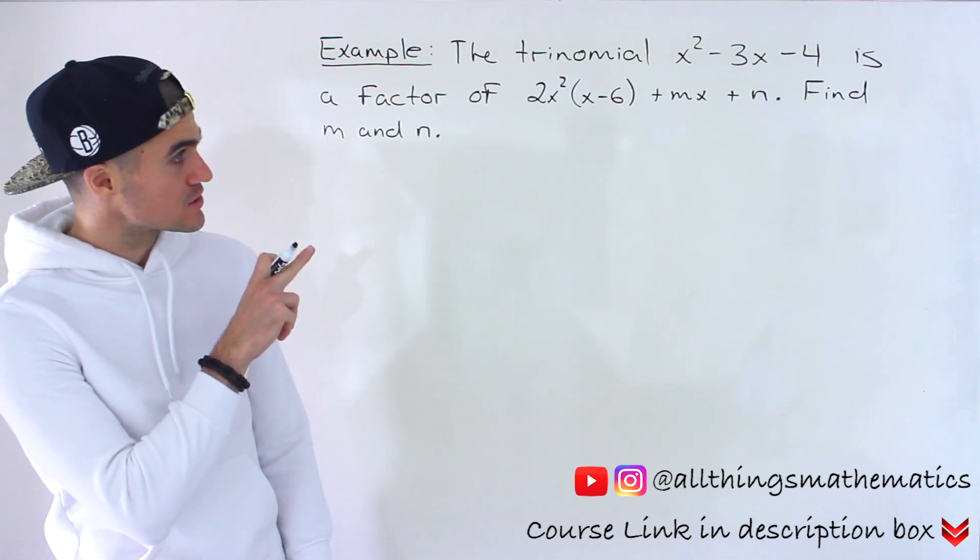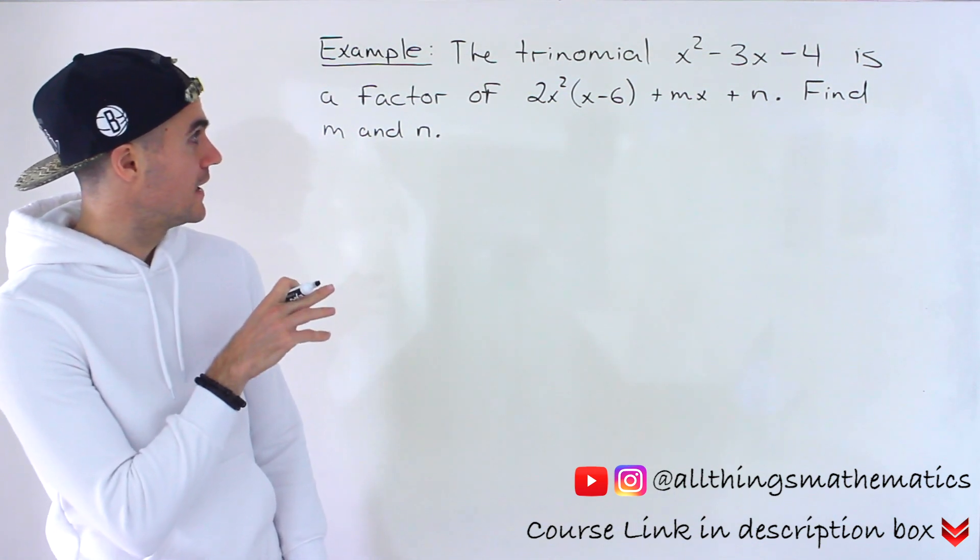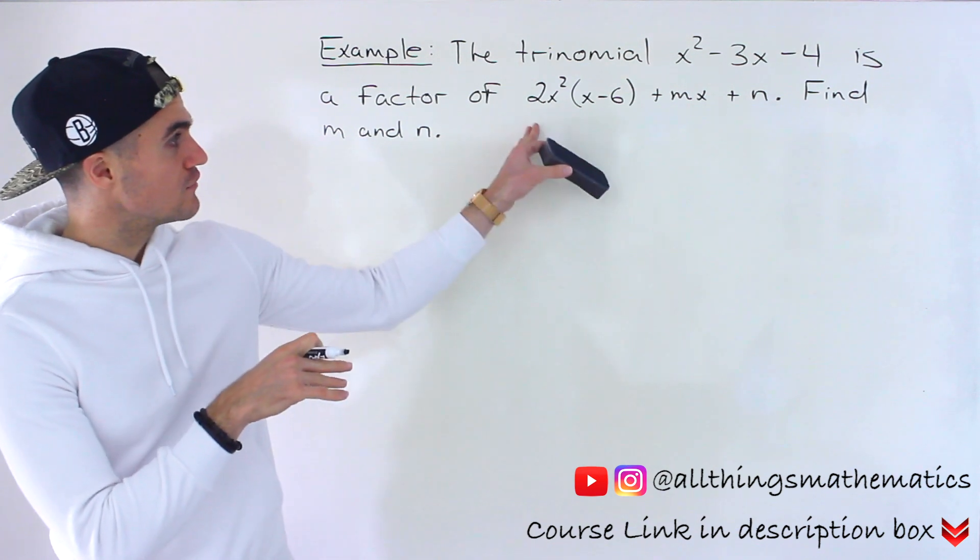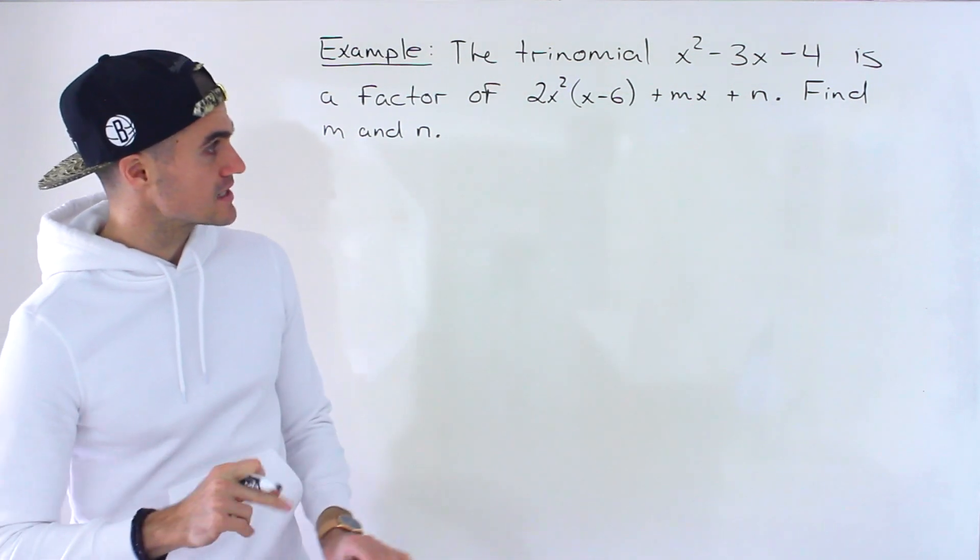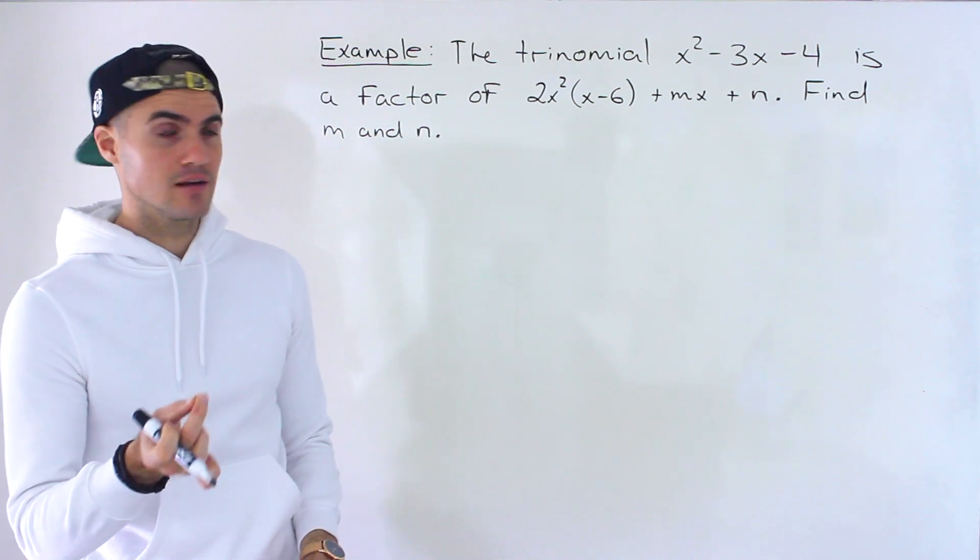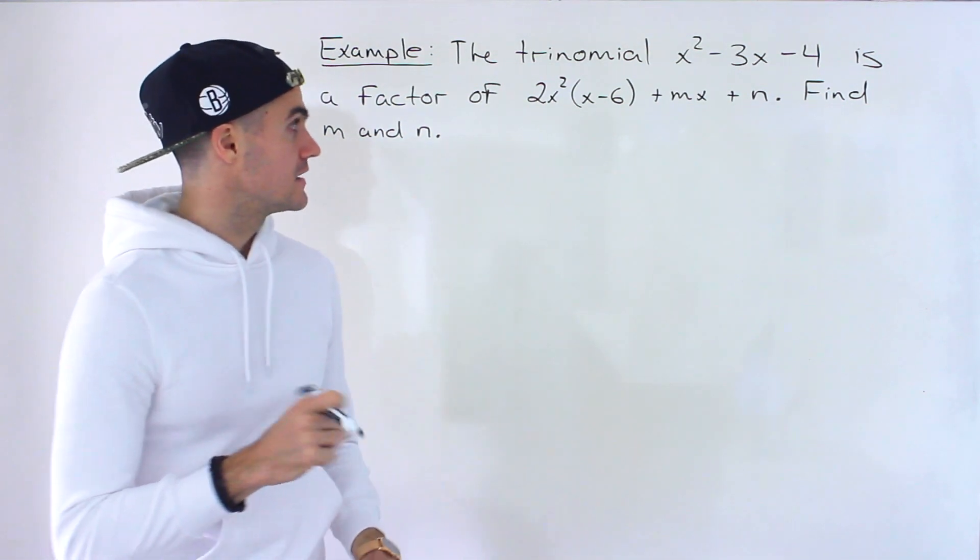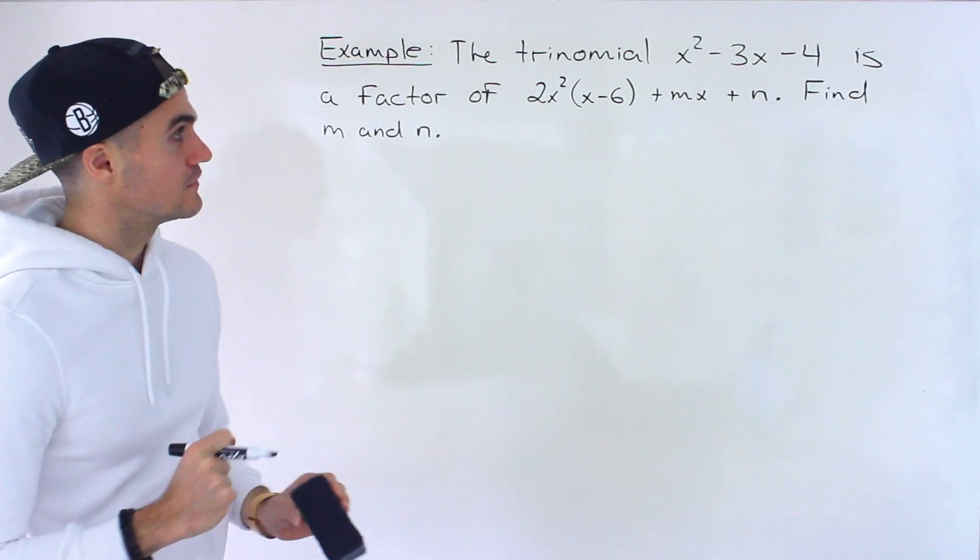So the trinomial x squared minus 3x minus 4 is a factor of this polynomial 2x squared bracket x minus 6 plus mx plus n. And we have to find the m and the n value.